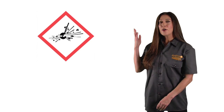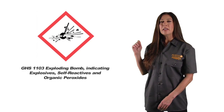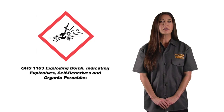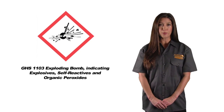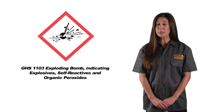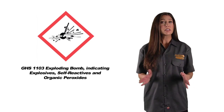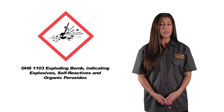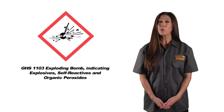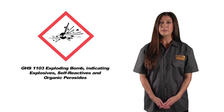Our fourth symbol is GHS 1103, exploding bomb, indicating explosives, self-reactives, and organic peroxides.